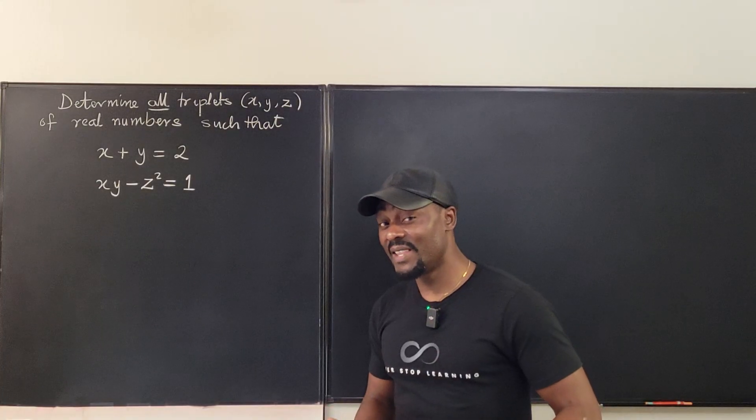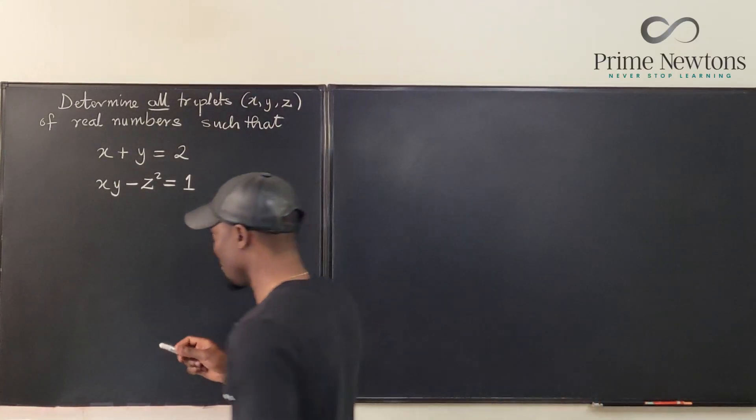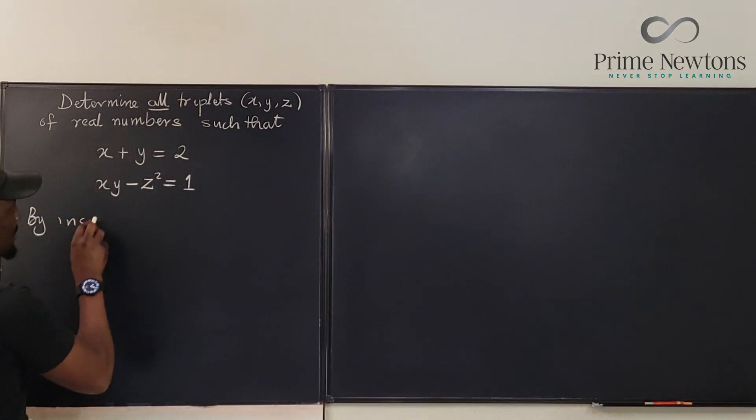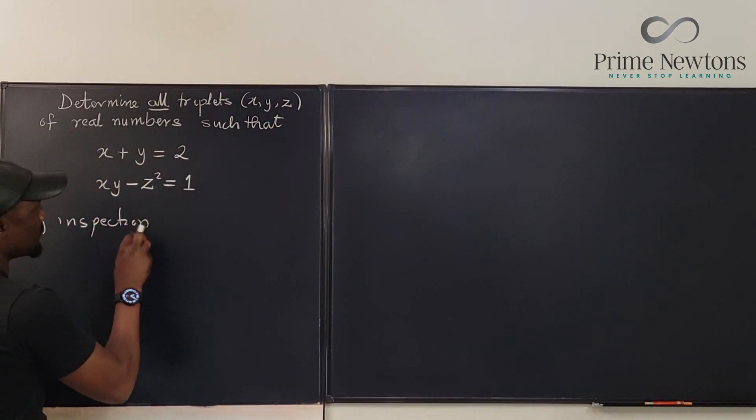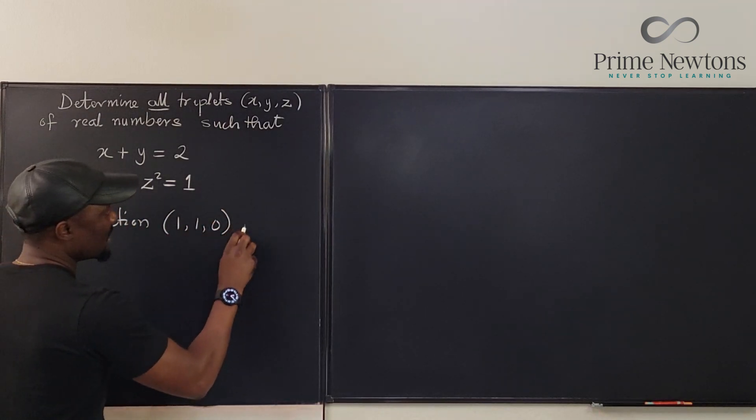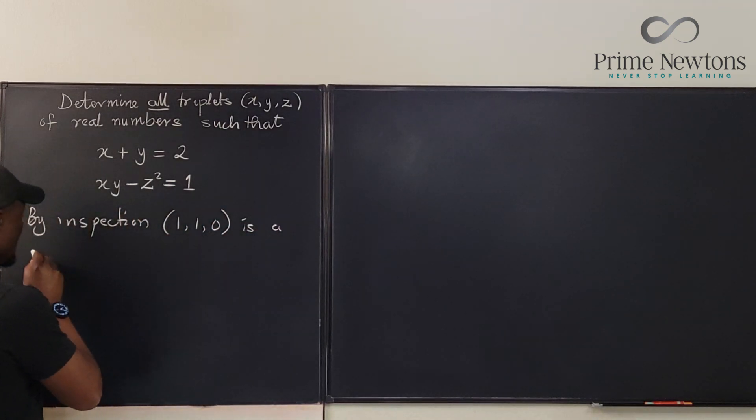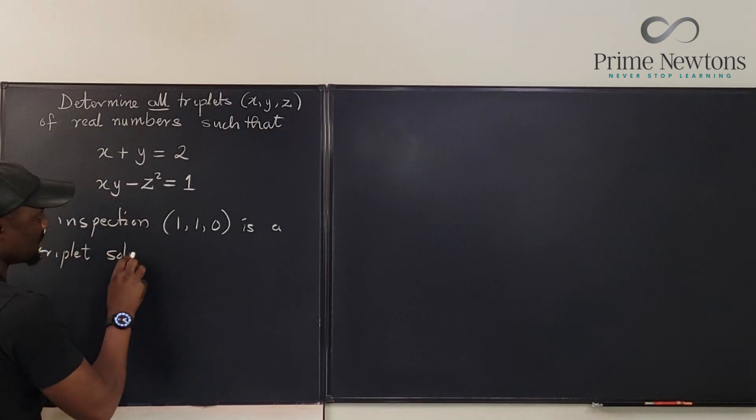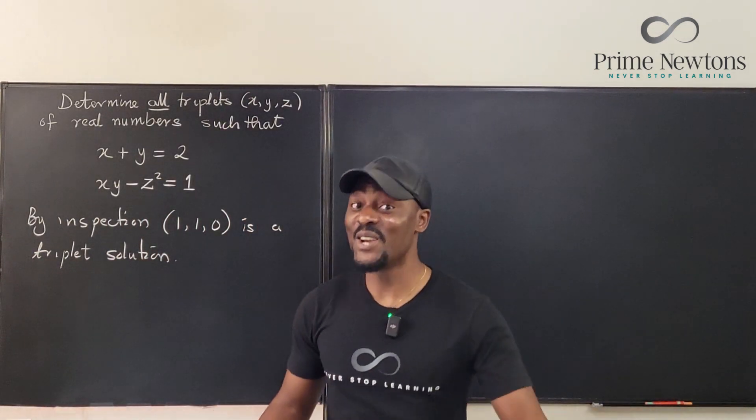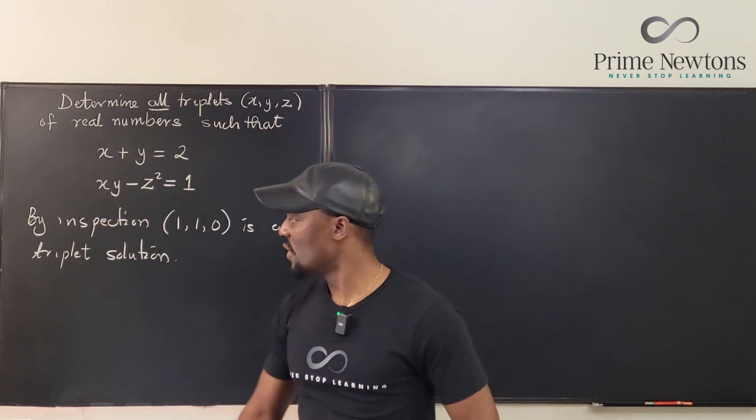Like I did in the intro, we already found one set of solutions, so by inspection, (1, 1, 0) is a triplet solution. Is this the only solution? Well, we have to figure that out. Is there another solution we have to find out?